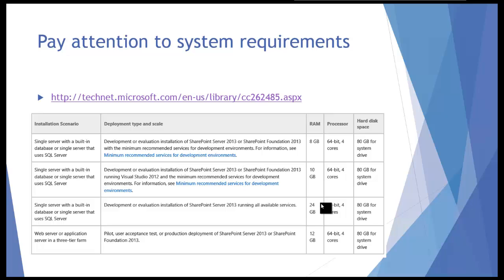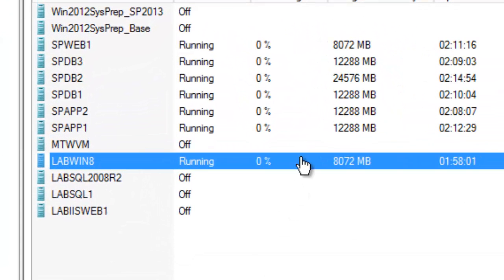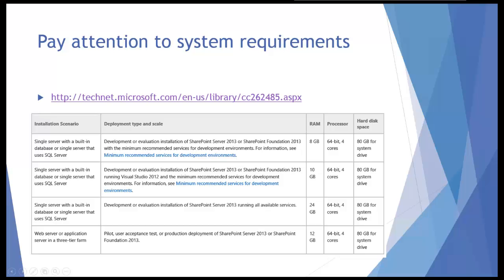Also pay attention to system requirements. The system requirements for SharePoint are published and should be taken seriously. Just because you attended a class where you installed SharePoint with very small VMs with a couple of gigs of RAM doesn't mean you should use that kind of configuration for production or even staging. The VMs we'll use today look like this: for the most part they're 12 gigabyte VMs, one of the database servers has 24 gig, and the web front ends are 8 gig. These requirements are fairly well documented on the Microsoft TechNet sites.